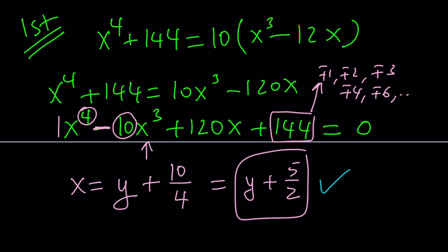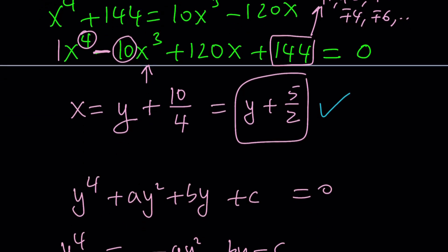So, 144 actually has quite a few factors, and if you really want to know how many factors it has, you can go ahead and do this little number theory trick. You can do the prime factorization. Notice that 144 is 16 times 9, and that will be 2 to the 4th times 3 to the 2nd.